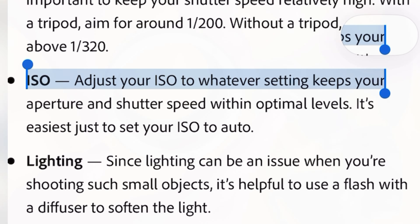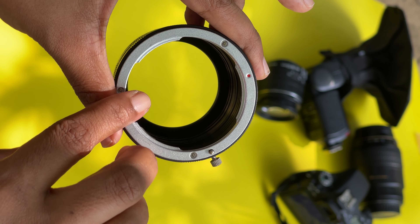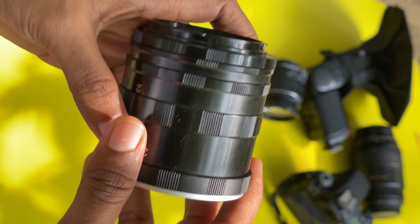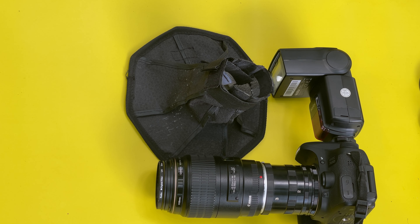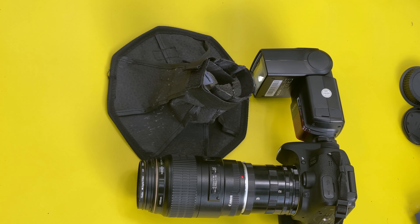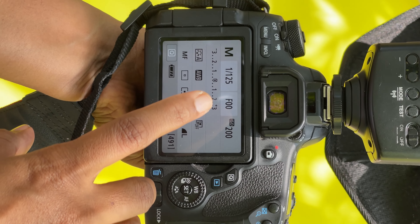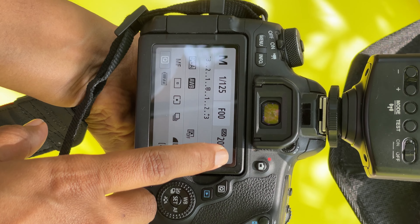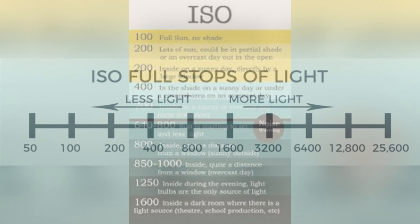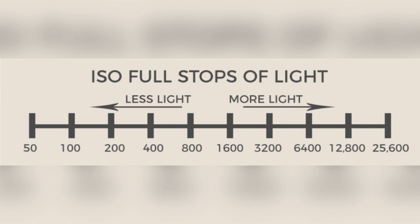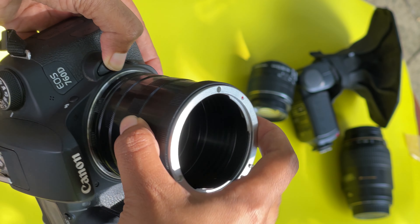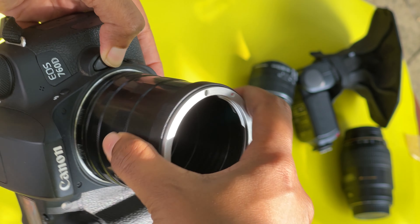You can set the contact points on the extension tube. You can set the external light and flash. You can set the ISO to the appropriate value. You can set the external light and attach the camera on the extension tube.